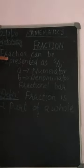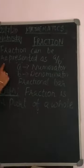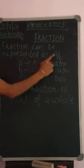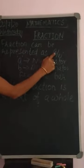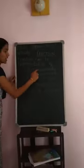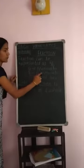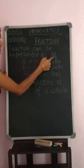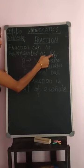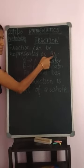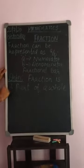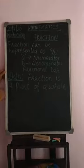A fraction can be represented as A by B. So what is A? A is the numerator and B is the denominator. You can see one bar over here — A by B. What is that bar? It is called the fractional bar.